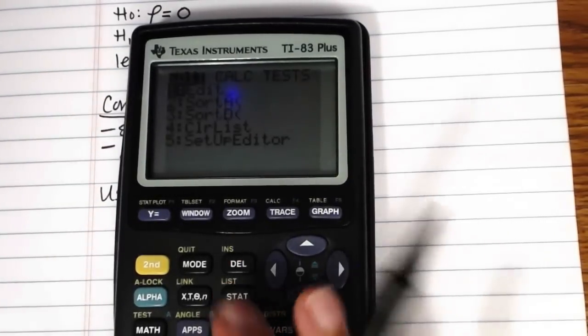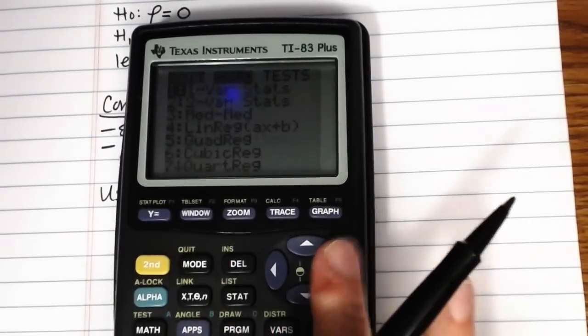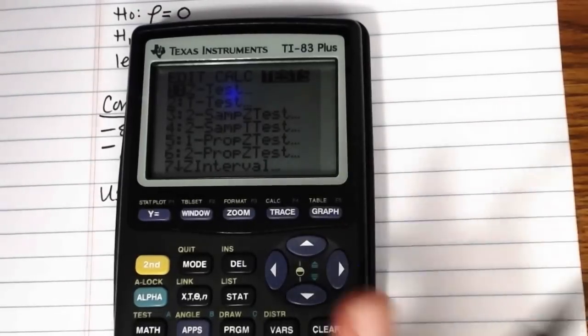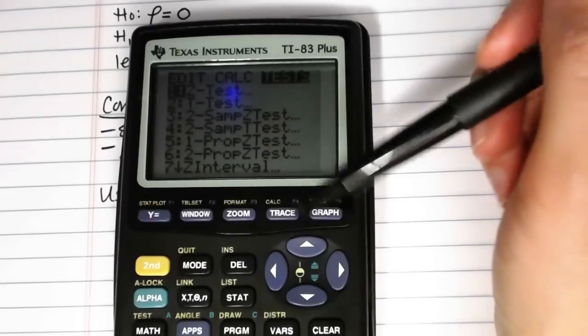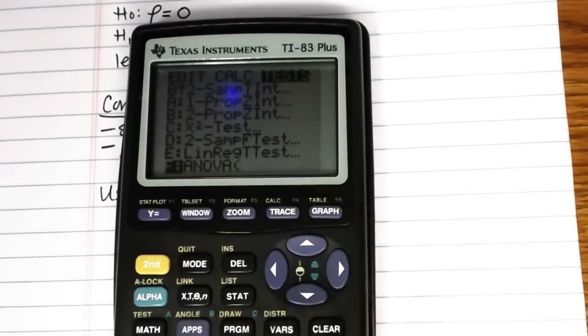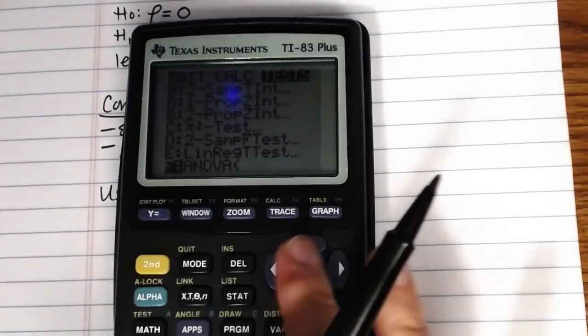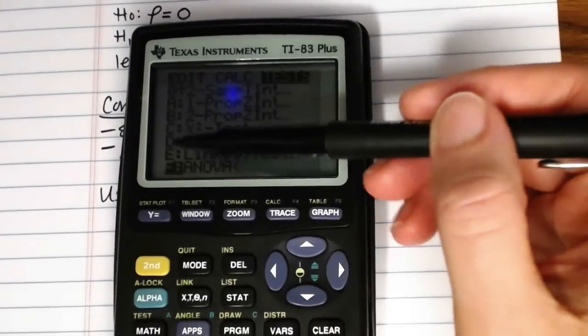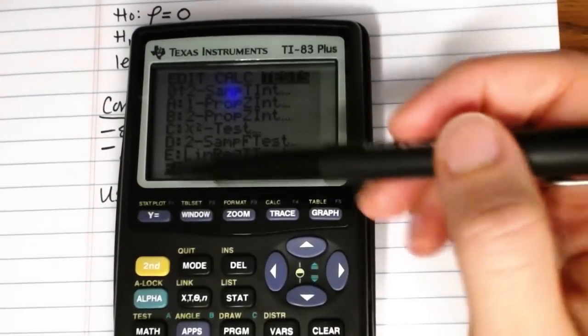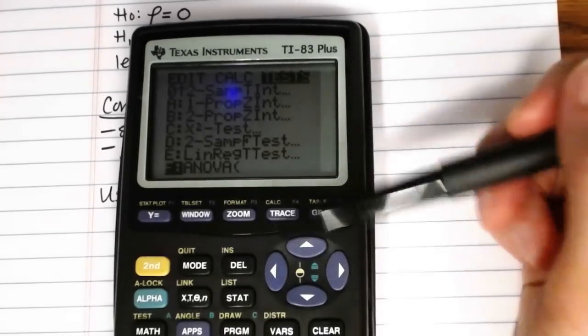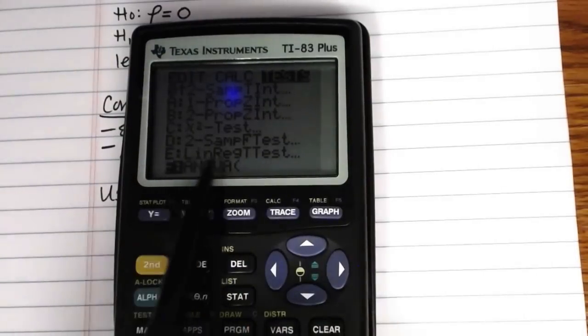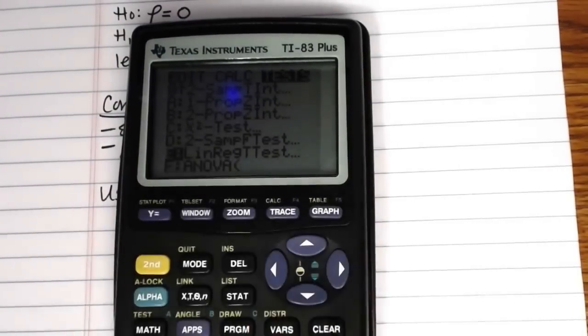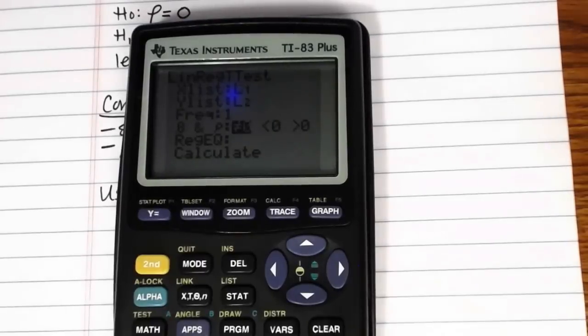And then we will go to stat. Press the right arrow key twice to go over to test. And then LinReg T-test is actually so far at the bottom of this list, it's frequently faster to hit the up arrow key to loop around and scroll down to the bottom. And you may or may not have all of these same options at the end that I have here. It's going to depend on your model of calculator and the operating system. But you should have one called LinReg T-test. That's the one that you want to select.